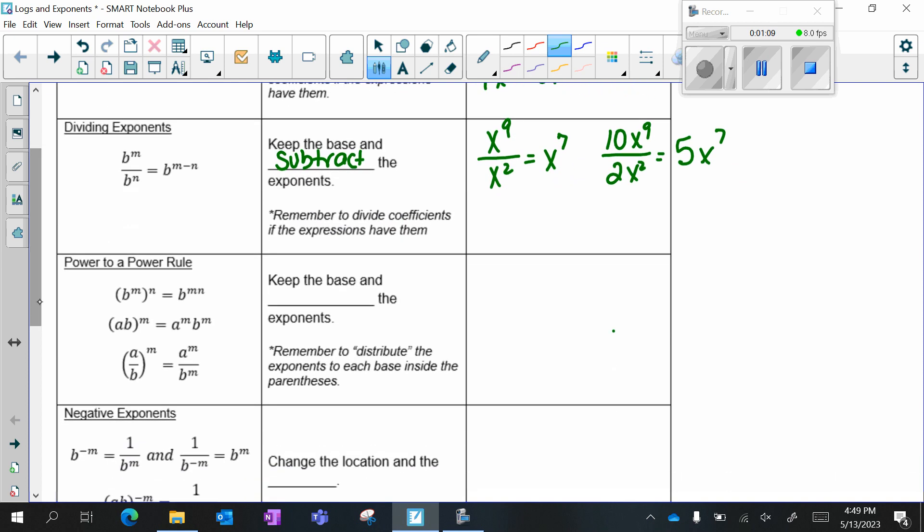Power to a power rule, you're going to keep the base and multiply the exponents. So if I have x to the fourth to the third, this is really like x to the fourth times x to the fourth times x to the fourth. So then you could use your rule for multiplying, which would be to add four plus four plus four gives me x to the twelfth. But the shortcut is just to multiply, because four times three gives me x to the twelfth.